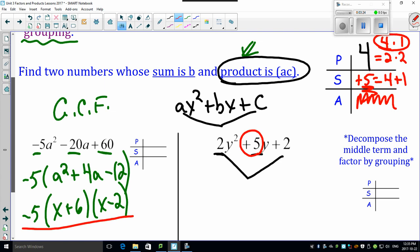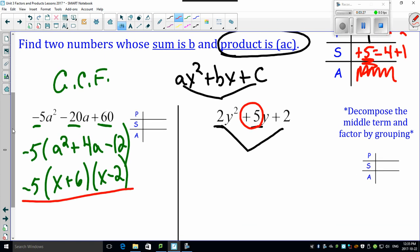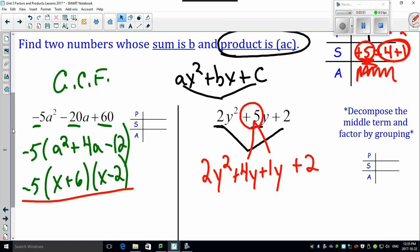This is gonna freak you out at first, but once you get the hang of this, it's no problem. Look: the 2y² stays there. 5 is now a combination of these two numbers: 4y + 1y. I didn't change anything. 4y and 1y still give you 5y. Put the last one in there. Notice what I just did: I just made this four terms, and when you see four terms, you're gonna group factor.